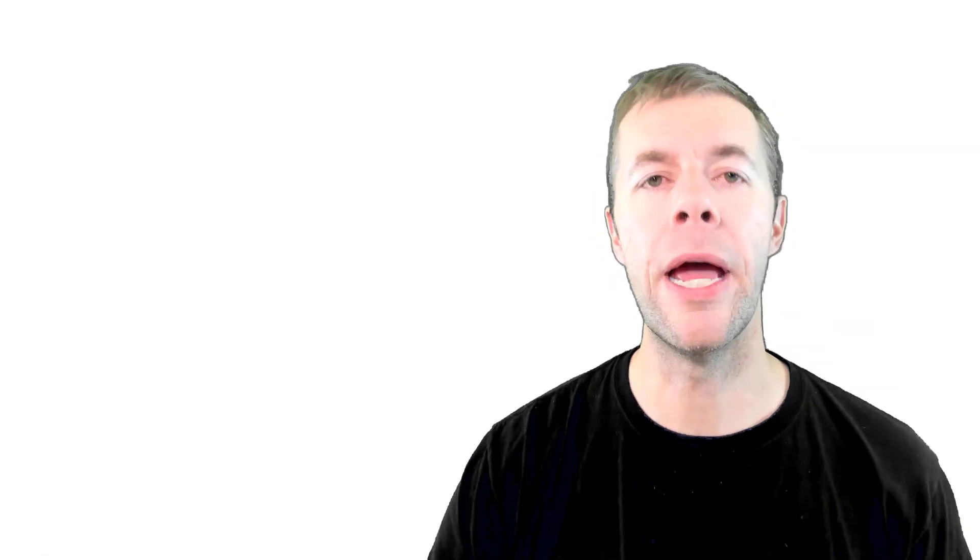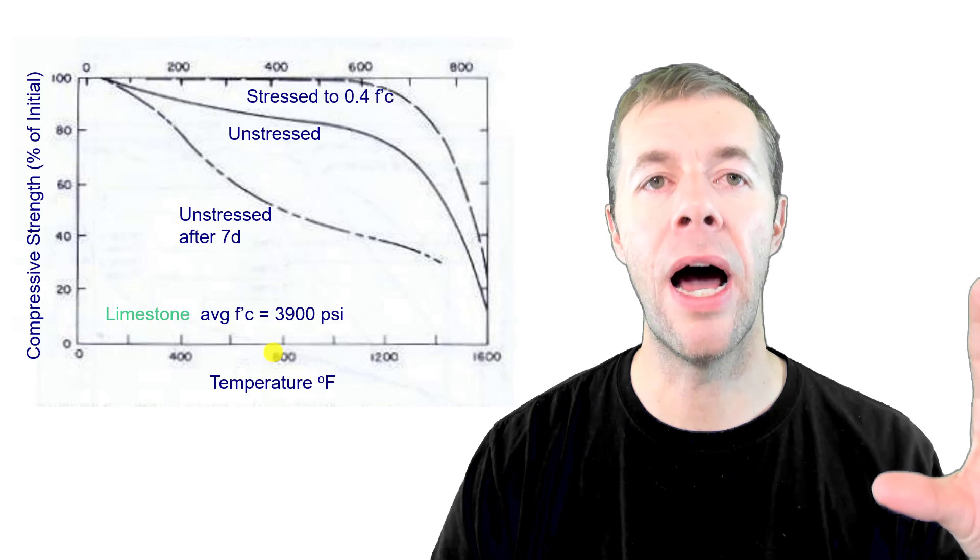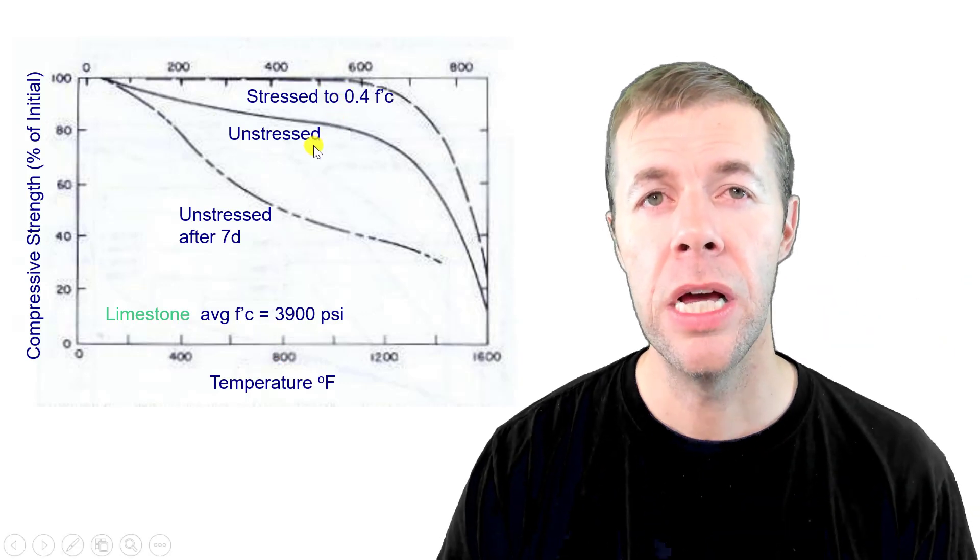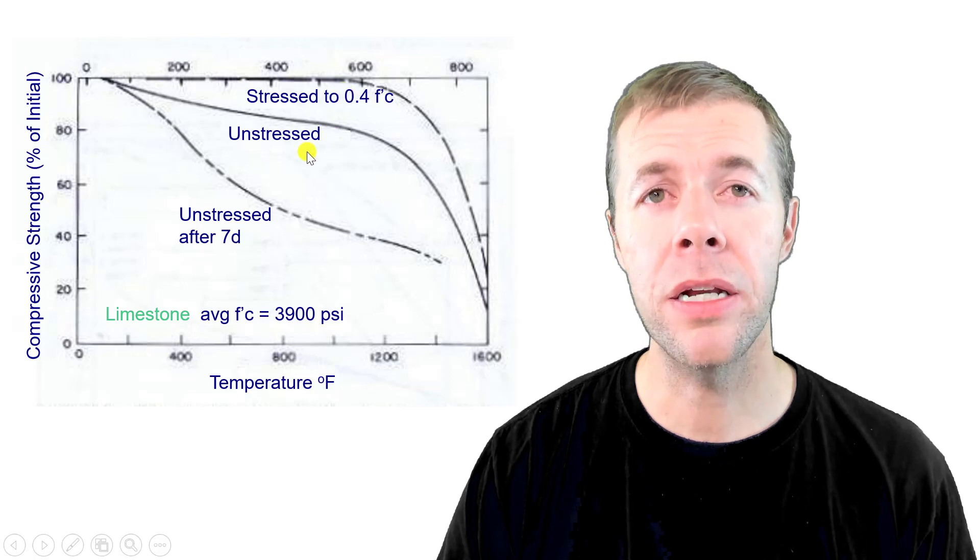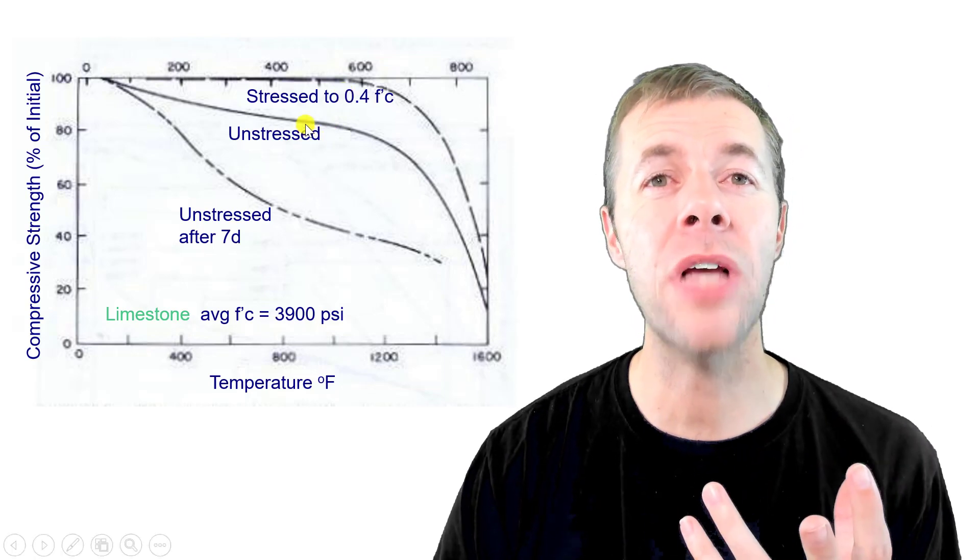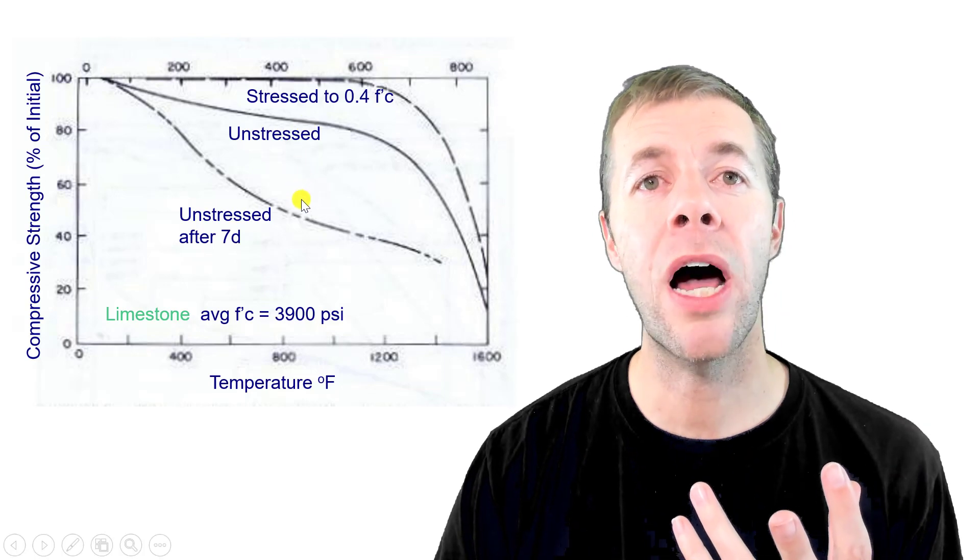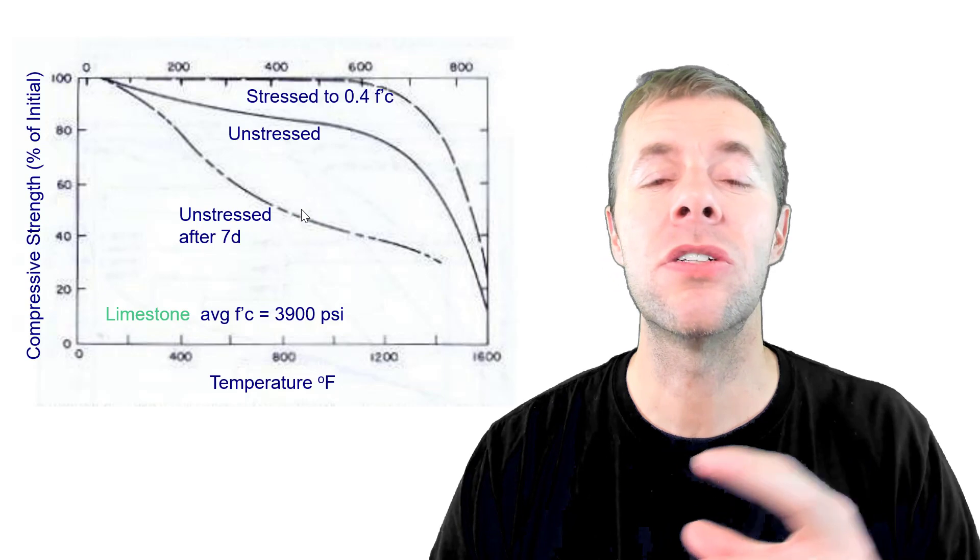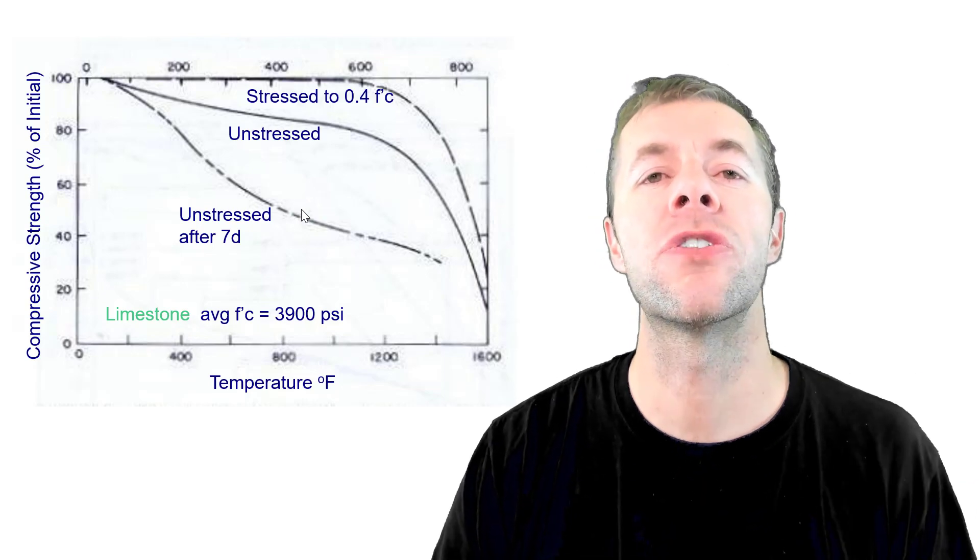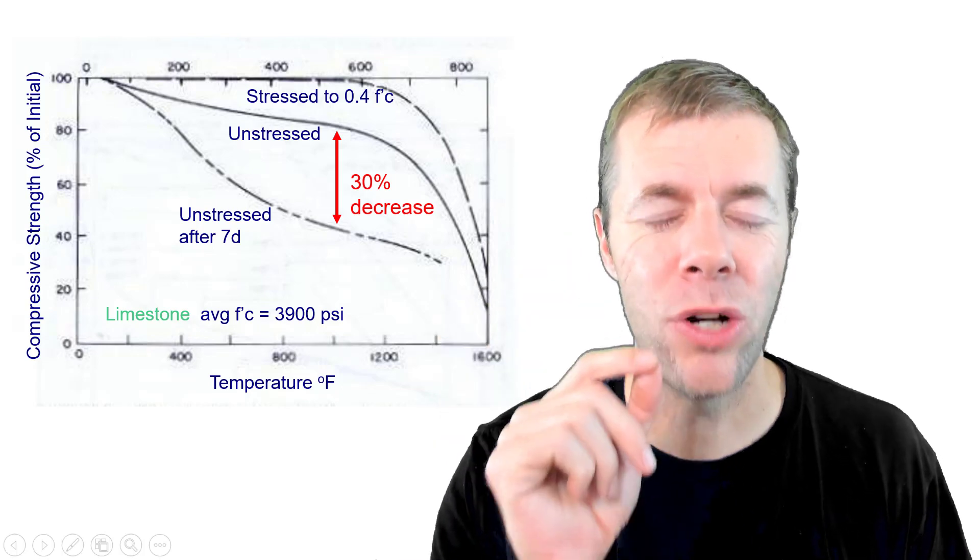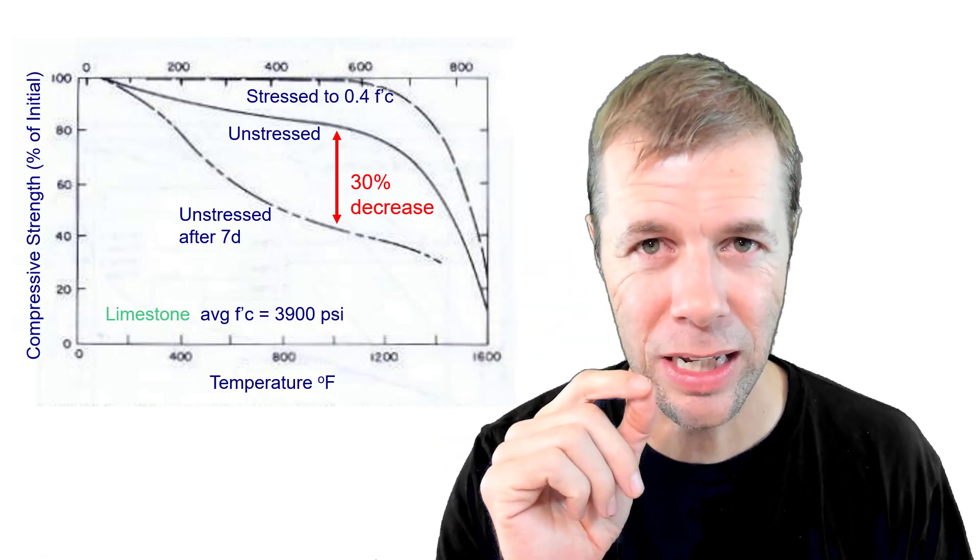Let's show this in a different way. I'm plotting all on the same graph. This is all for limestone aggregate. Here is the material that was stressed but tested while it's hot. Here is the material that was unstressed but tested while it's hot. And here is the same material but it was allowed to cool for seven days. Not cooled quickly, just air cool for seven days. We see a 30 percent decrease in the capacity. What the heck is going on?